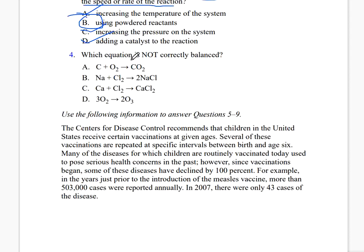Which equation is not correctly balanced? For letter A, we have one carbon on each side and two oxygens on each side — correctly balanced. Checking B and C: A and C are correctly balanced. For D, 3O2 and 2O3 gives 6 and 6 — correctly balanced. The correct answer for the one not correctly balanced is letter B.